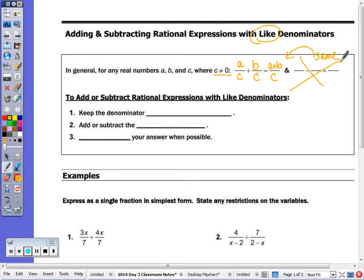So the rules, I don't want to rewrite it twice. The rules are step one, keep the denominator the same. Step two, add or subtract the numerators and simplify your answer when possible.